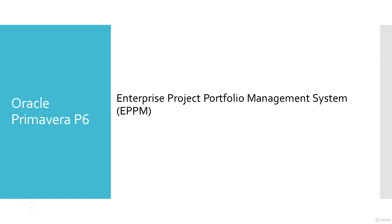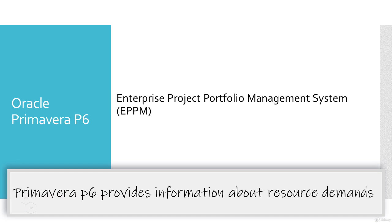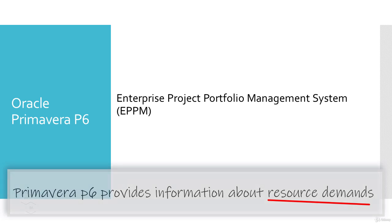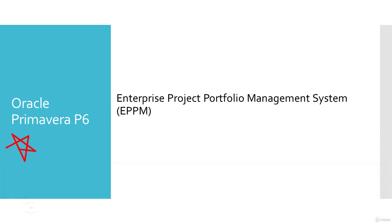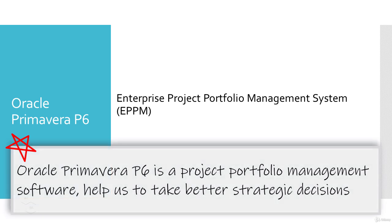Primavera P6 helps us to monitor and control even the little details that are necessary to finish the project on time. It helps us to understand current resource demands — which resources we need at what specific stage during the project management lifecycle. P6 also helps us to set priorities and evaluate long-term staffing requirements. If required, we can reorganize our projects to fit shifting priorities without compromising the quality of our project deliverables. The key thing to remember is that Oracle Primavera P6 is a portfolio management system that helps us monitor, control, and take better strategic decisions.